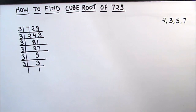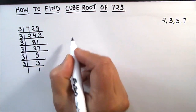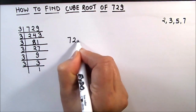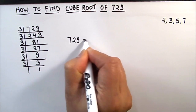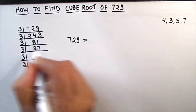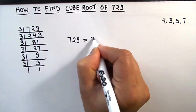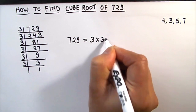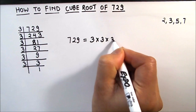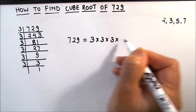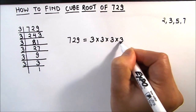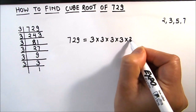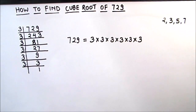Now our division is complete. We are going to write 729 as the product of its prime factors. So we have 3 × 3 × 3 × 3 × 3 × 3 as the factors of 729.